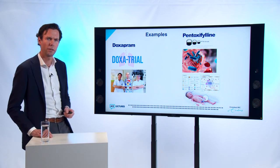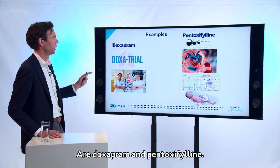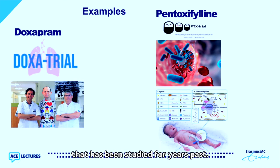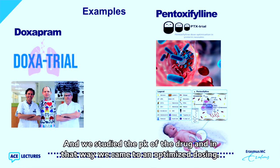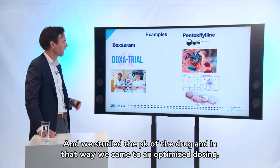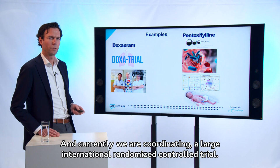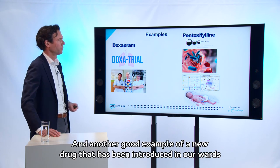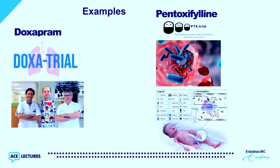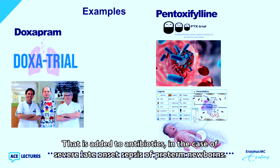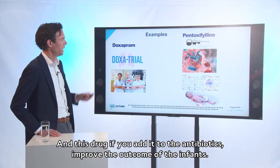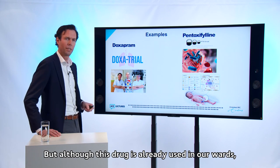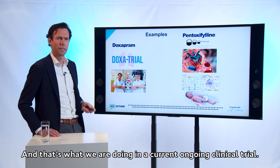Two important drugs currently studied by our group in the NICU are doxapram and pentoxifylline. Doxapram is used off-label in our hospital; we have studied it for years through retrospective analysis of its PK to arrive at an optimized dosing, and we are now coordinating a large international randomized controlled trial studying its effectiveness and long-term safety. Pentoxifylline is a xanthine derivative added to antibiotics in cases of severe late-onset sepsis in preterm newborns that improves infant outcome, but optimal dosing has never been studied — that is what our current ongoing clinical trial is doing.